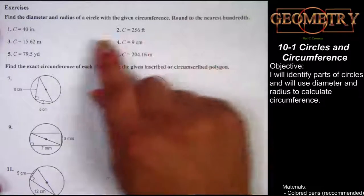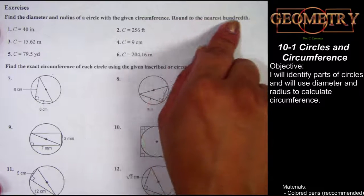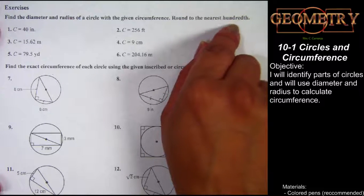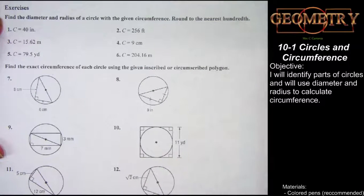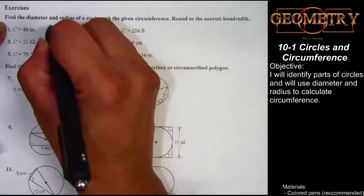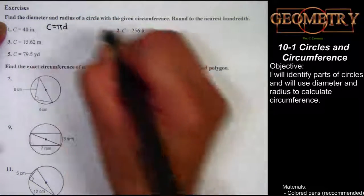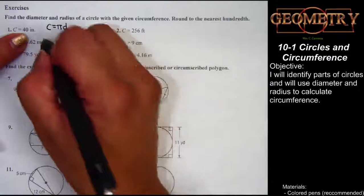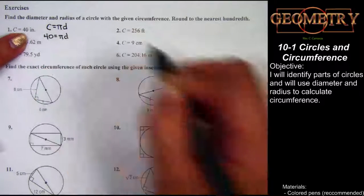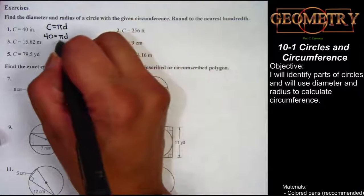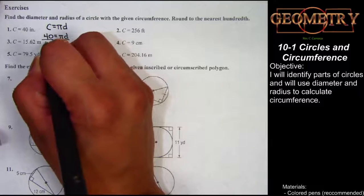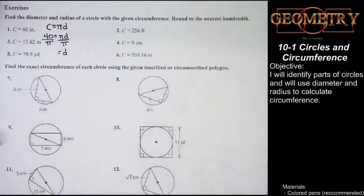The first set asks us to find the diameter and the radius of the circle when given the circumference, rounding to the nearest hundredth — so we replace pi with 3.14. For the first one, the circumference is 40. Using the formula C = π × d, I substitute 40 for C and divide both sides by pi to isolate the diameter. Typing 40 ÷ π into the calculator gives the diameter. The calculator has a π button, so I don't need to remember 3.14 — it handles that.